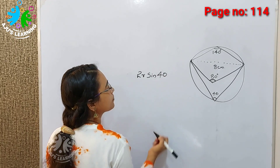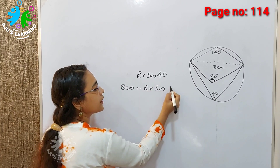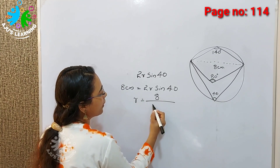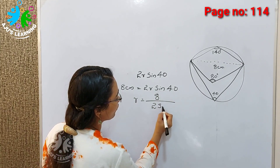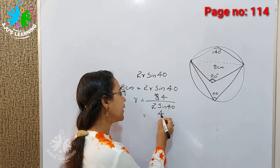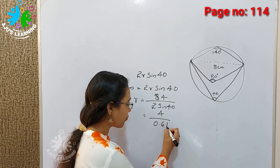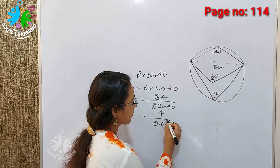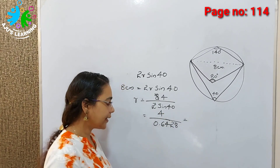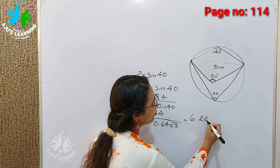Then sine 40. 8 cm equals 2R sine 40. Then R equals 8 divided by 2 sine 40, which gives 4 divided by sine 40. Sine 40 equals 0.6428. So 4 divided by 0.6428 equals approximately 6.222.